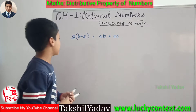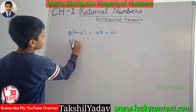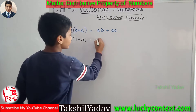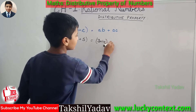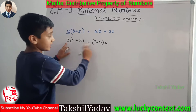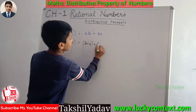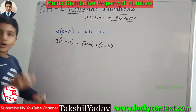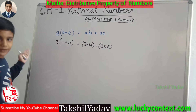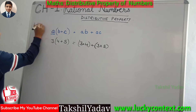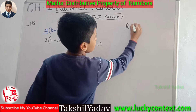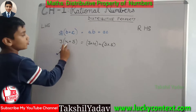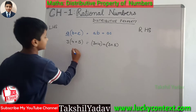We shall understand it with the help of an example. I take the value of A as 3, value of B as 4 and value of C as 5. On the LHS we put the formula: 3 into 4 plus 5. This is the LHS and on the RHS we put 3 into 4 plus 3 into 5. Now let's solve both sides. We get 3 into 4 plus 5. 4 plus 5 is 9 and 9 into 3 is 27.